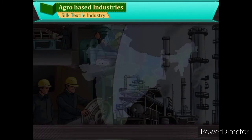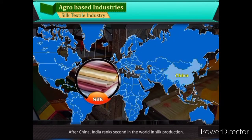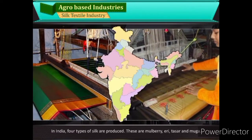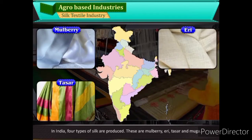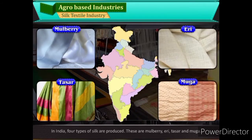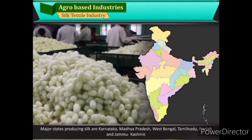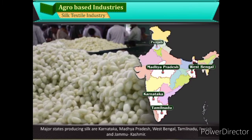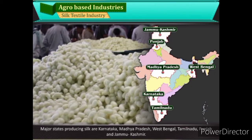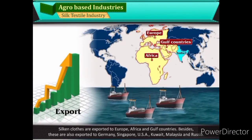Silk Textile Industry: Silk production has a long tradition. After China, India ranks second in the world in silk production. In India, four types of silk are produced: mulberry, eri, tassar, and muga. Today, there are about 300 silk weaving mills in India. Major states producing silk are Karnataka, Madhya Pradesh, West Bengal, Tamil Nadu, Punjab, and Jammu & Kashmir. Silken clothes are exported to Europe, Africa, and Gulf countries.